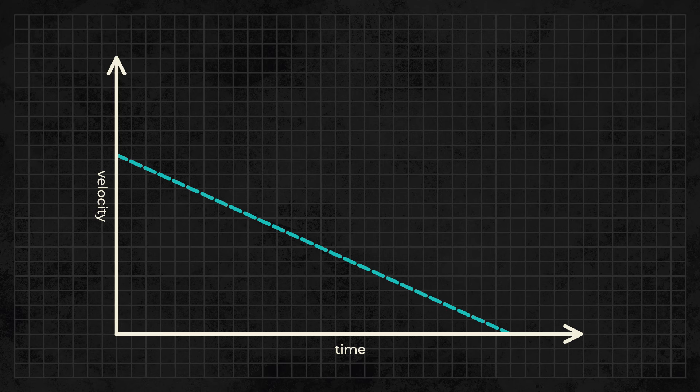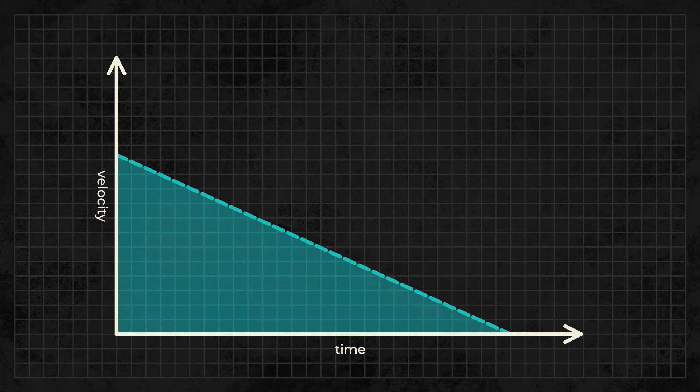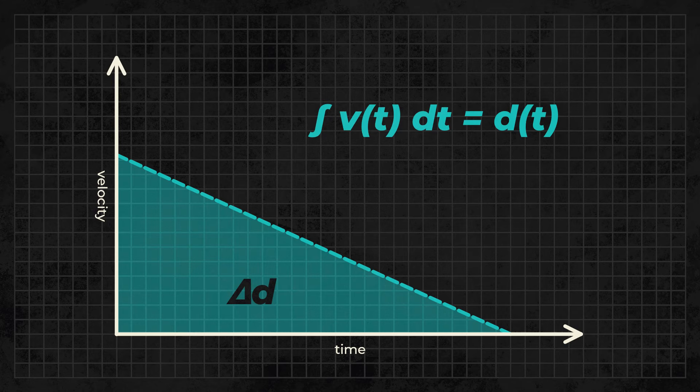Next, we'll move on to velocity time graphs. The slope of a velocity time graph is equal to the acceleration at that point. Also, the area under a velocity time graph is equal to the displacement of the object. If you've taken calculus, you'll understand this to mean that the integral of a velocity time graph is a displacement time graph.